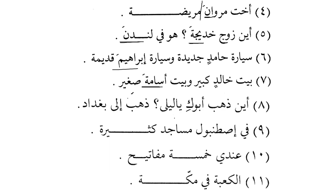Baghdad is the name of a city, so it is Mamnoo min as-Sarf. Fi Istambul-a - in Istanbul. Masajidu kathiratun - there are lots of mosques in Istanbul. Istanbul is the name of a city, that is why it does not accept Kasra. And Masajidu does not have Tanwin - why? Because it is on the pattern of Mafa'ilu.